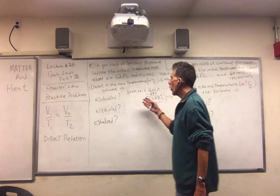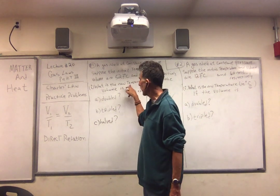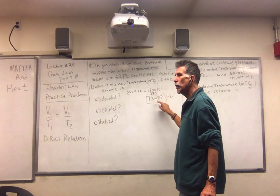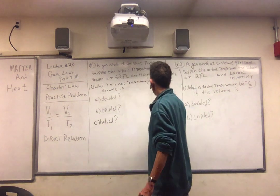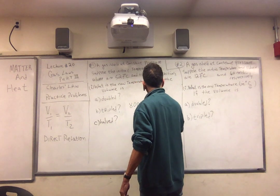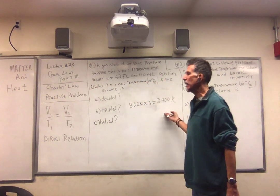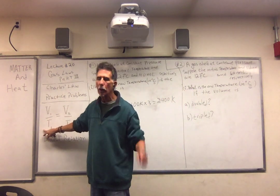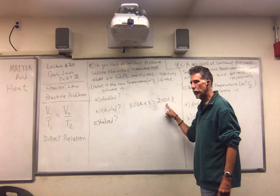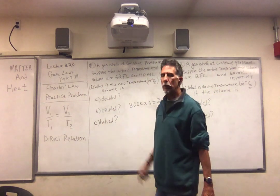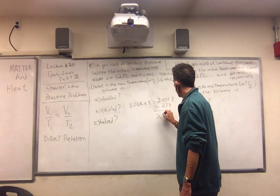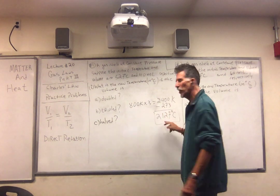Once again, all calculations must be done using Kelvin — convert Celsius to Kelvin first. So 2 times 800 is 1,600; subtract 273 to go back to Celsius. Next: we're tripling 800 Kelvin. Remember, we've got to work in Kelvin. Times 3 is 2,400 Kelvin. We're tripling the volume so the temperature must triple, but it must triple in Kelvin. Then we get 2,400 Kelvin. I want the answer in degrees Celsius, so subtract 273, and we get 2,127 degrees Celsius. Check my math.